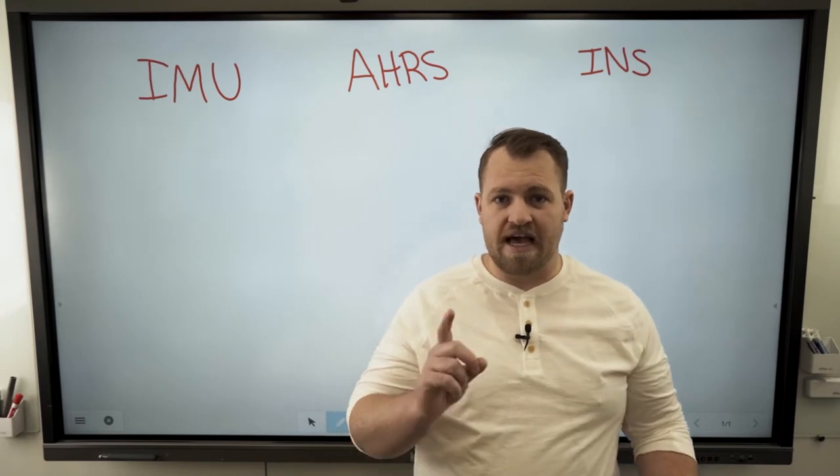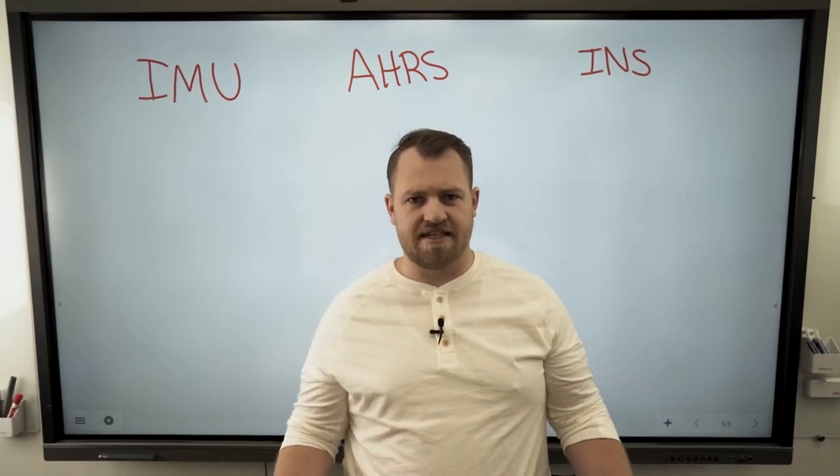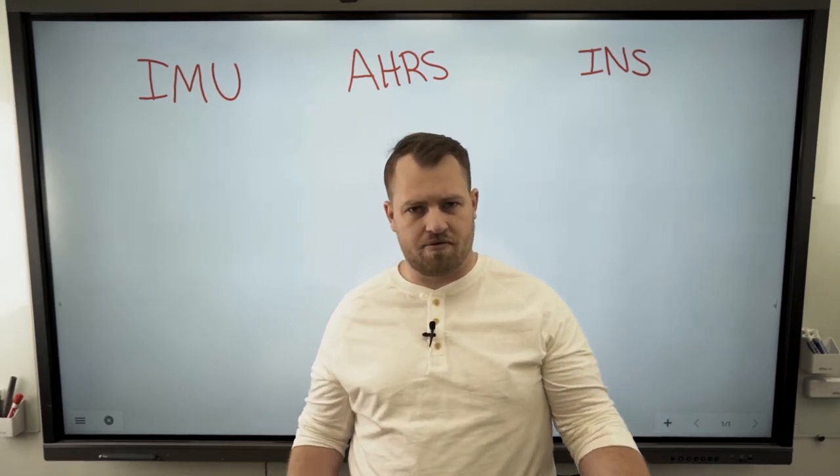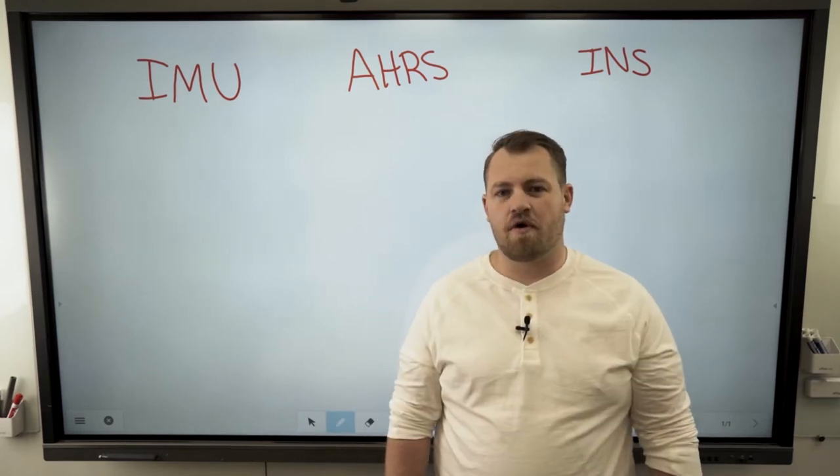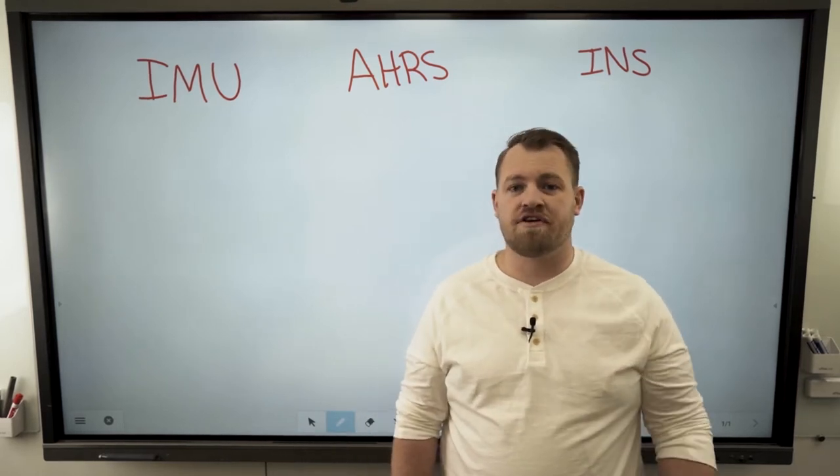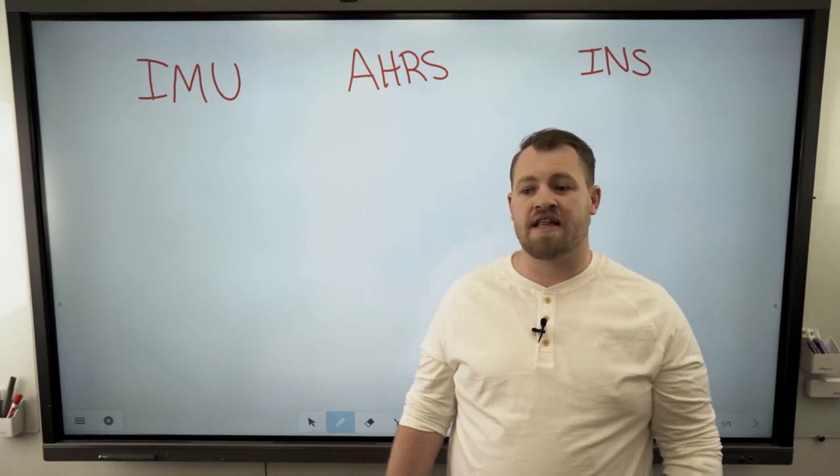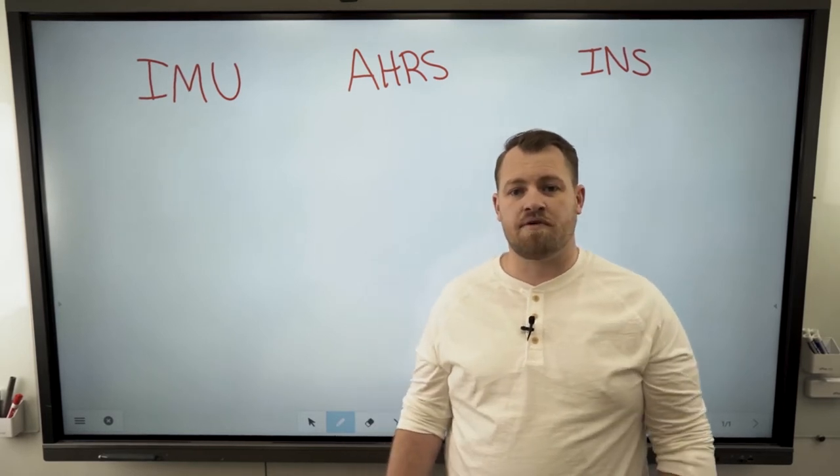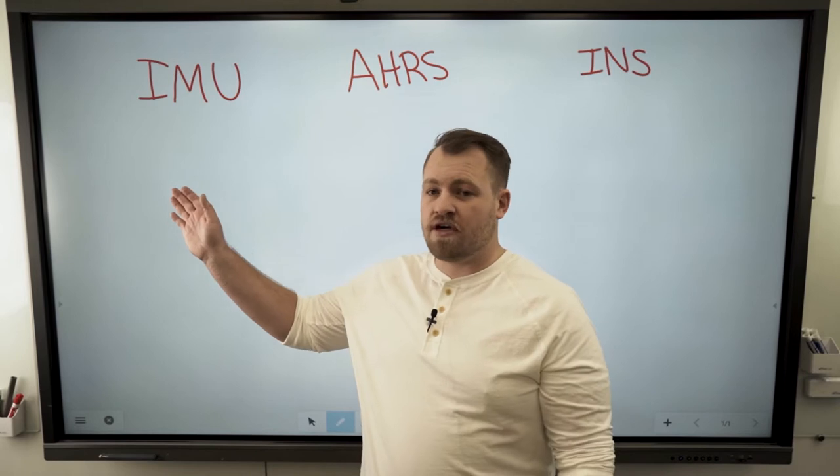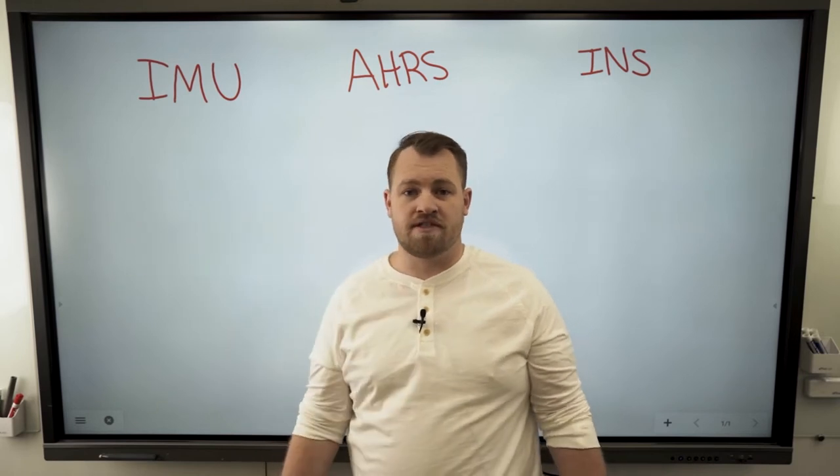The first one that we're going to start with is the IMU because it's the most basic. It is the core to the rest of our sensor products. The IMU or the inertial measurement unit is the most basic of the three and the most important thing about the IMU is that each one of these modules contains IMUs inside of it.